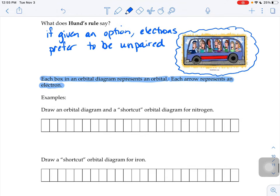So it asks us to draw an orbital diagram and a shortcut orbital diagram for nitrogen. So orbital diagrams are just a picture form of an electron configuration. So we figured out before that nitrogen's electron configuration was 1s2, 2s2, 2p3. Its shortcut electron configuration was helium, 2s2, 2p3.